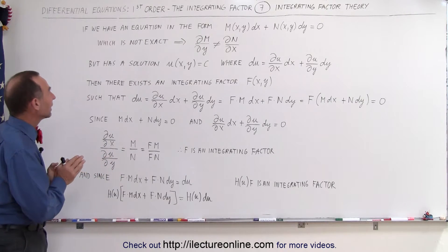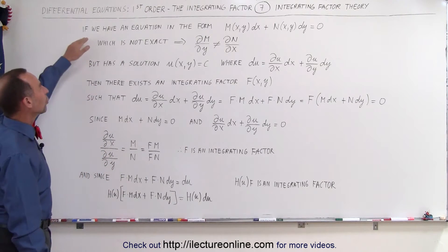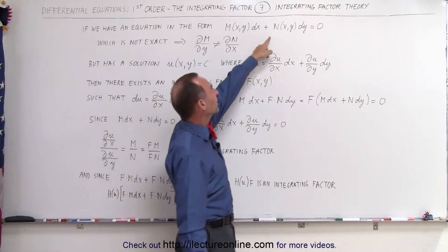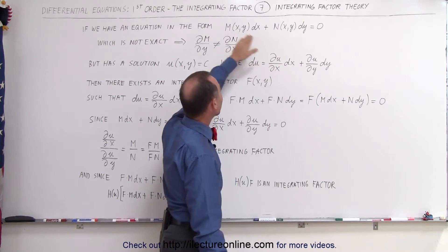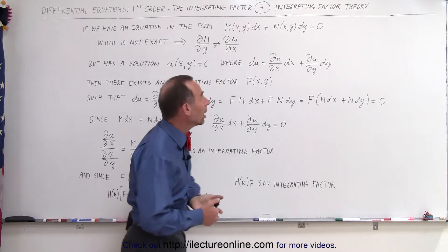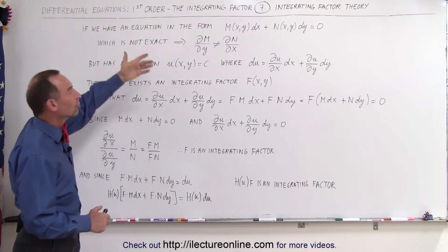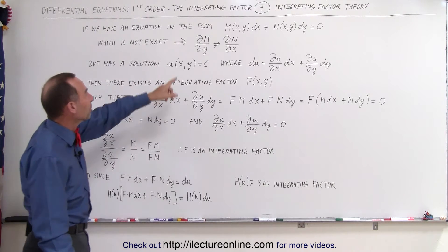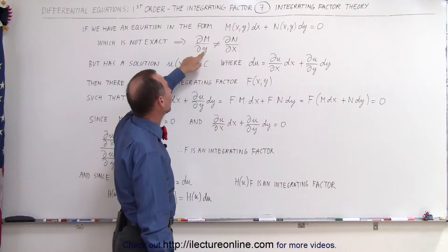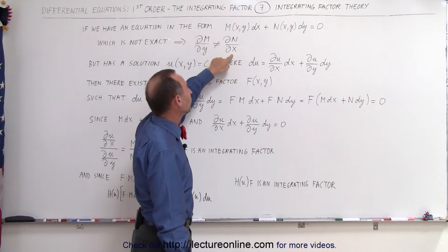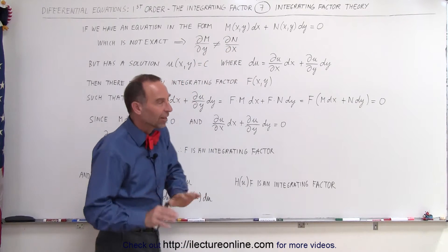So let's go back and assume that we have a differential equation in the form M times dx plus N times dy equals 0, where M and N are simply functions of x and y. And if we assume that that differential equation is not exact, which means that the partial of M with respect to y is not equal to the partial of N with respect to x, which indicates it's not exact.